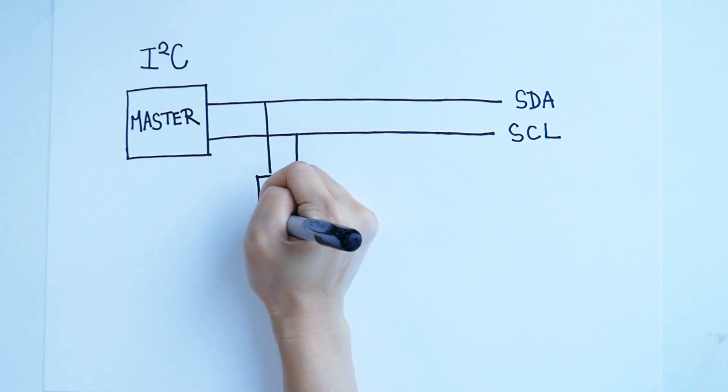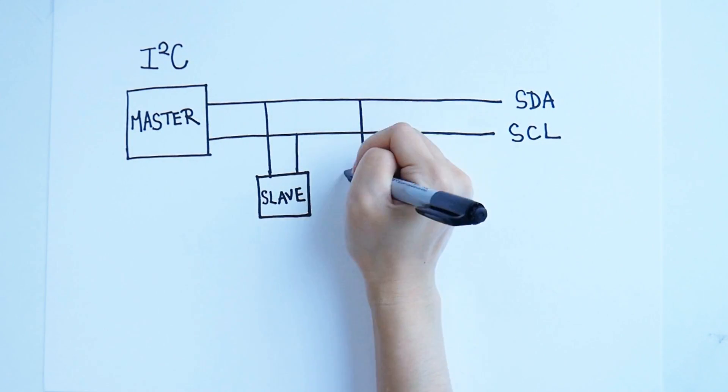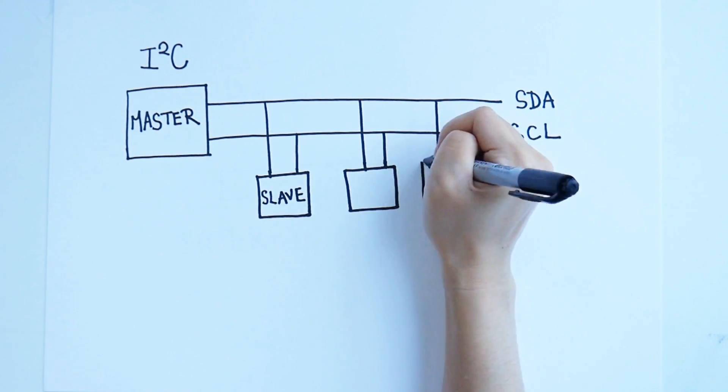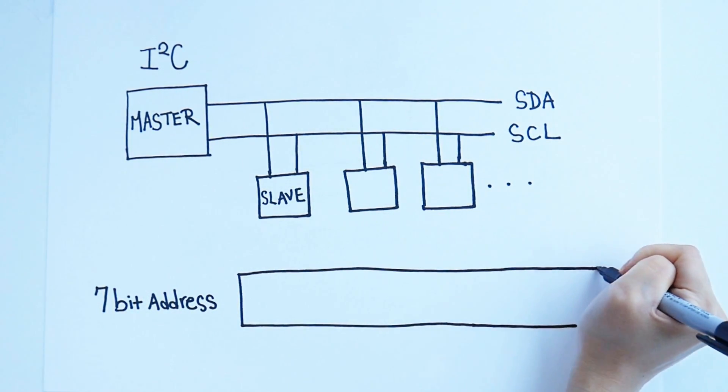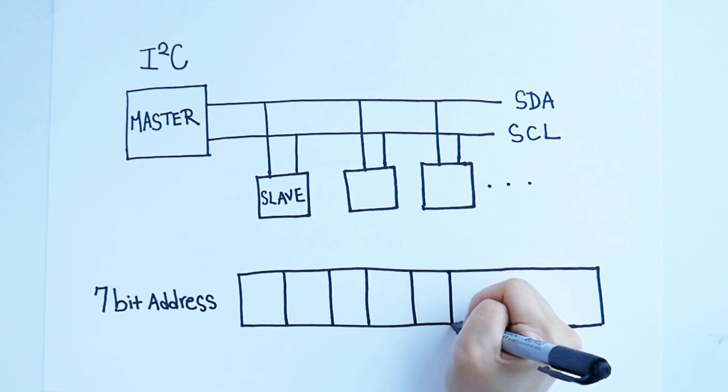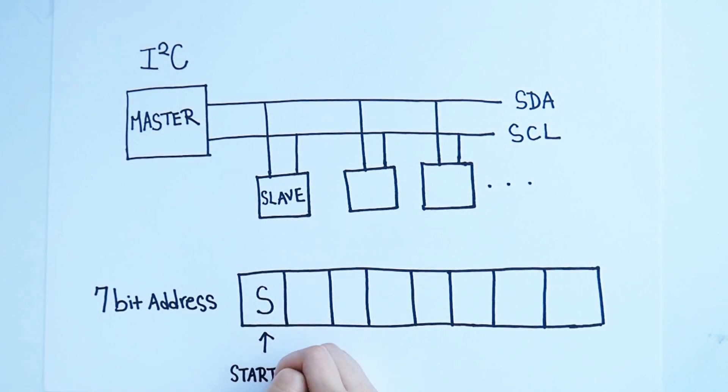The reason that I2C can use only two signals to communicate with a number of peripherals is in how communication along the bus is handled. Each I2C communication starts with a 7-bit or 10-bit address that calls out the address of the peripheral the rest of the communication is meant to receive.